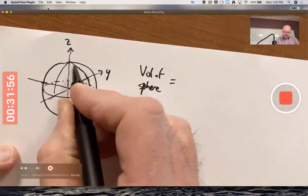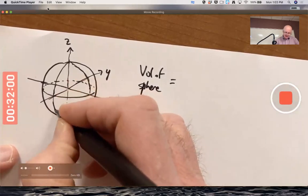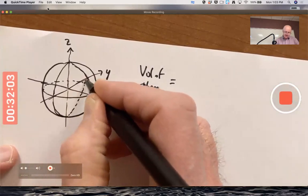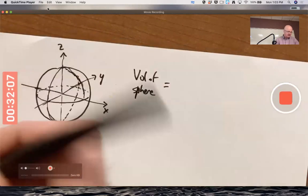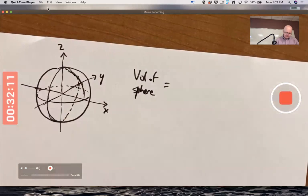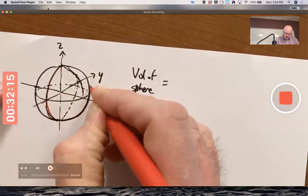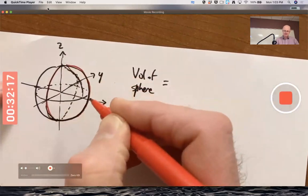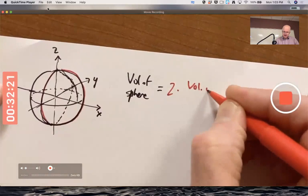But I think it's going to be simplest to find the volume of a hemisphere, half of sphere, where just x is positive. So that's to the right here. And then double it. Let's do this as two times the volume of the hemisphere.